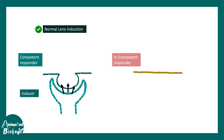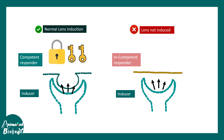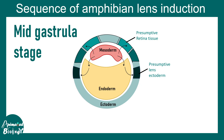This is like a two-way lock: you need two keys to open it. There must be a competent responder and an inducer, and both must interact simultaneously. An incompetent responder cannot follow the signals from the inducer, and the expected fate is never acquired. If you have only one key and not the other, the lock will never open. Now let's talk about the sequence of amphibian lens induction in more detail.